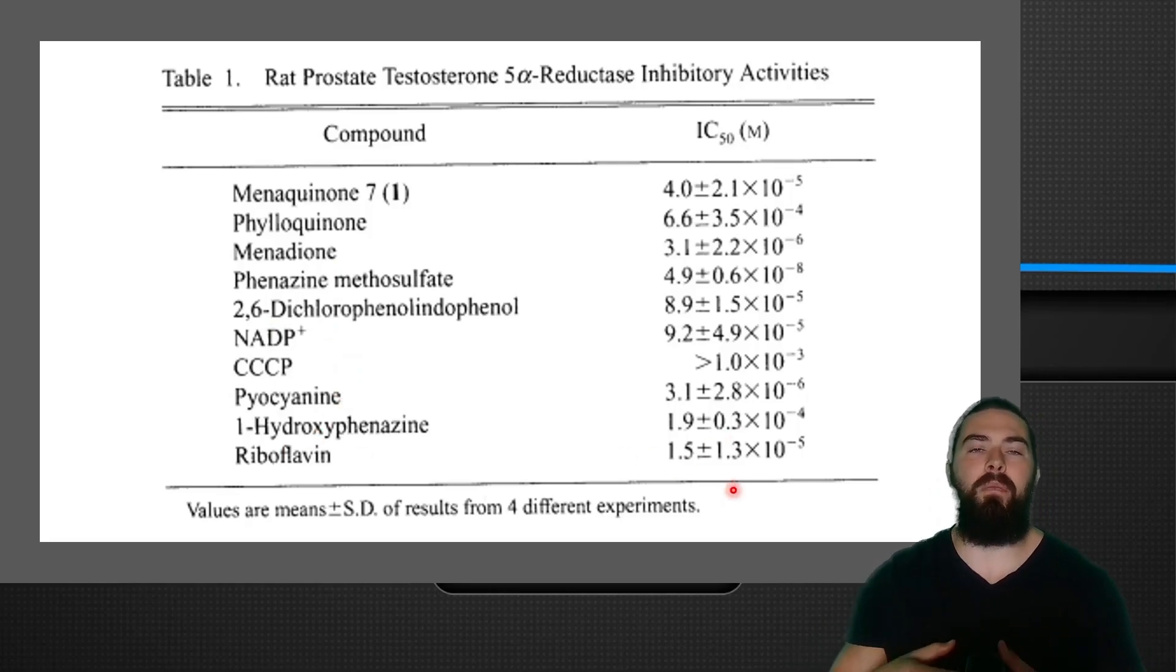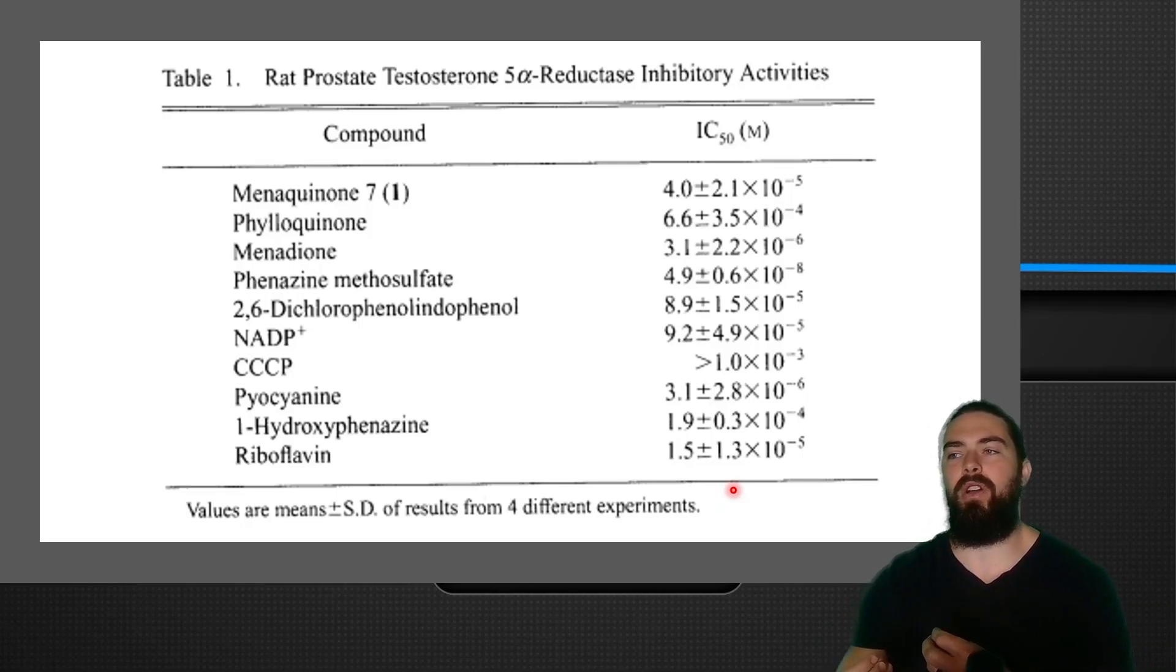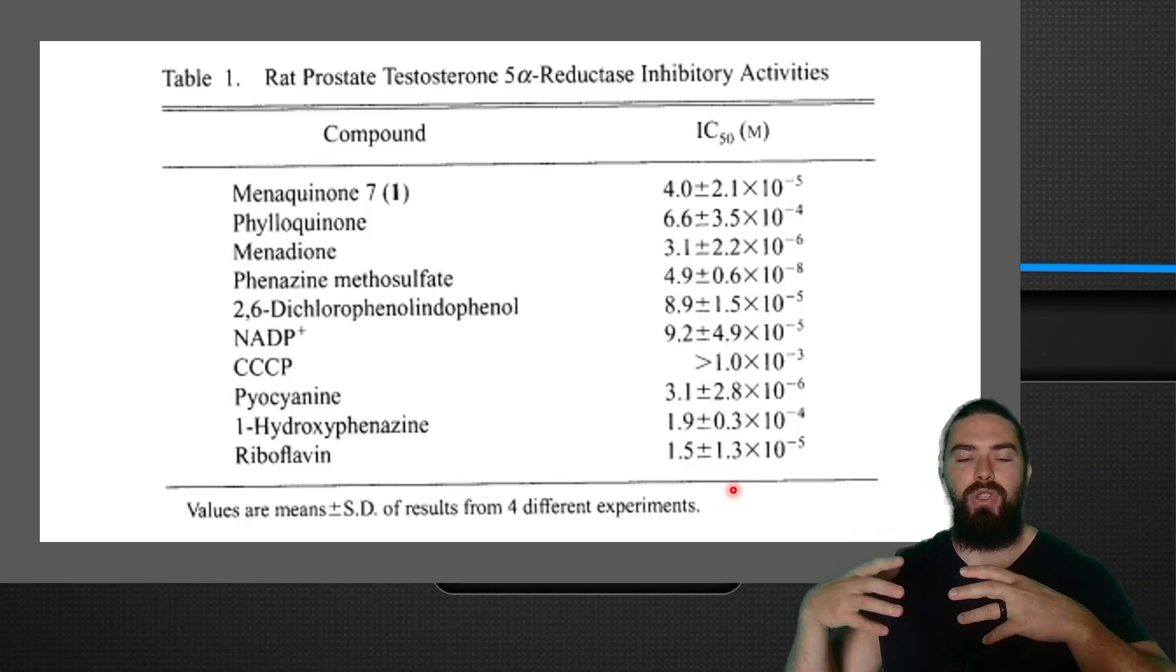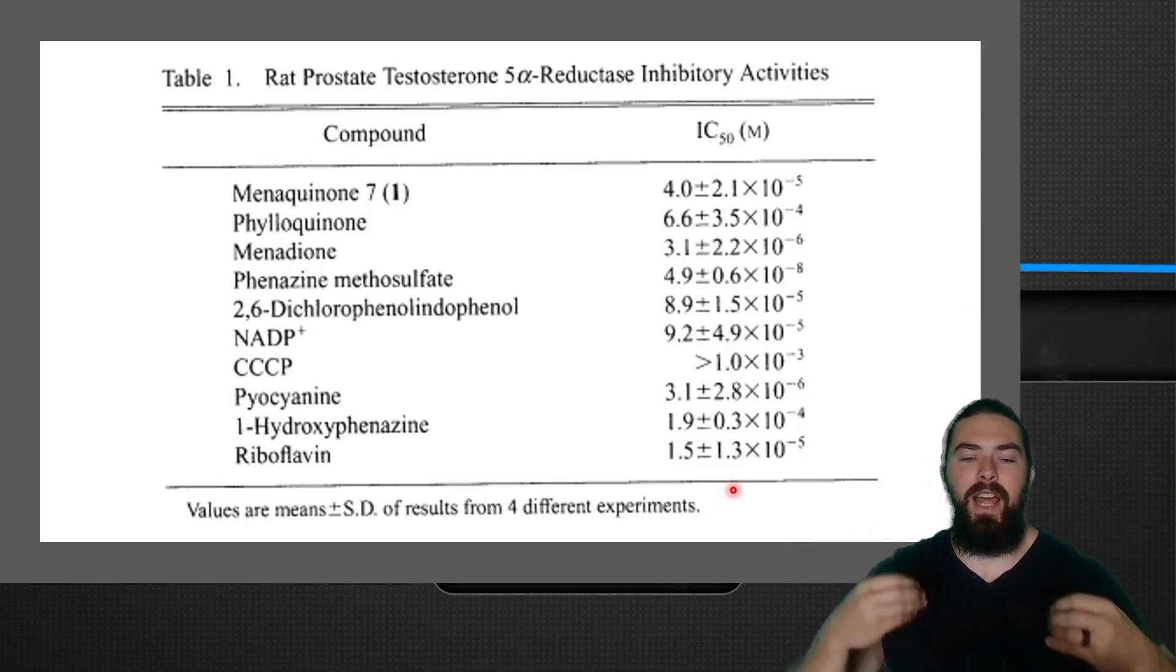or in the area where there is 5-alpha reductase. So just because this in vitro study inhibits 5-alpha reductase doesn't mean it's going to do the same thing in vivo, because it depends on where it accumulates and what concentrations accumulates. Like a cell would regulate how much vitamin B2 it's allowing into the cell. So ultimately it will not have the same strength of inhibition compared to this in vitro study, because they can bypass those regulatory effects.